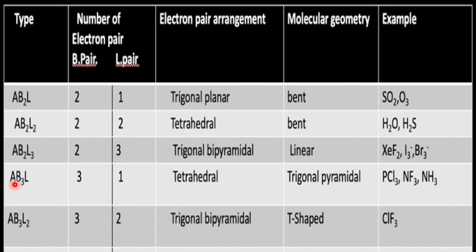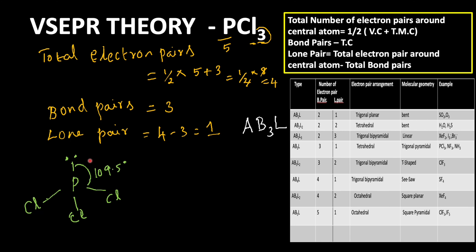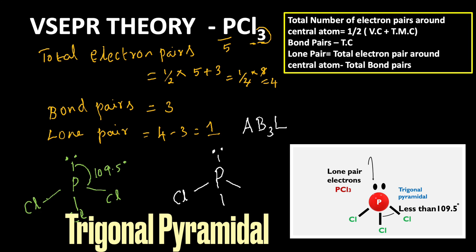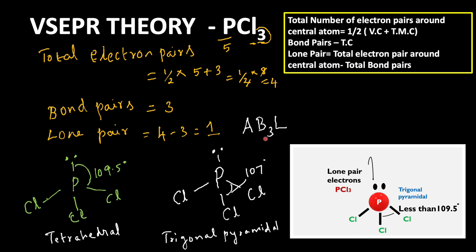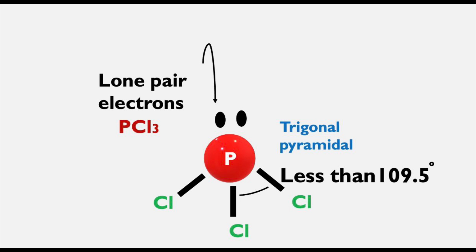Look at the table here. If the molecular type is AB3L — meaning three bond pairs and one lone pair — the electron pair arrangement is tetrahedral. But due to the lone pair of electrons, the molecular geometry is trigonal pyramidal. Theoretically it should be tetrahedral, but due to the presence of the lone pair, lone pair–bond pair repulsion is greater, which is the reason the shape becomes trigonal pyramidal. In PCl3, the molecular type is AB3L, total electron pairs = 4, bond pair = 3, lone pair = 1. The electron pair arrangement is tetrahedral, but the actual molecular shape is trigonal pyramidal.